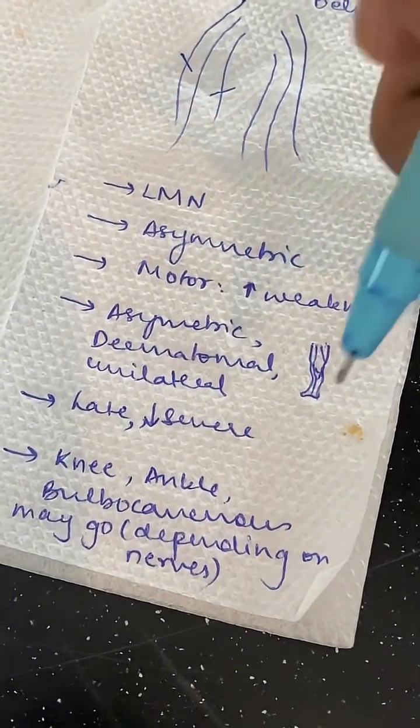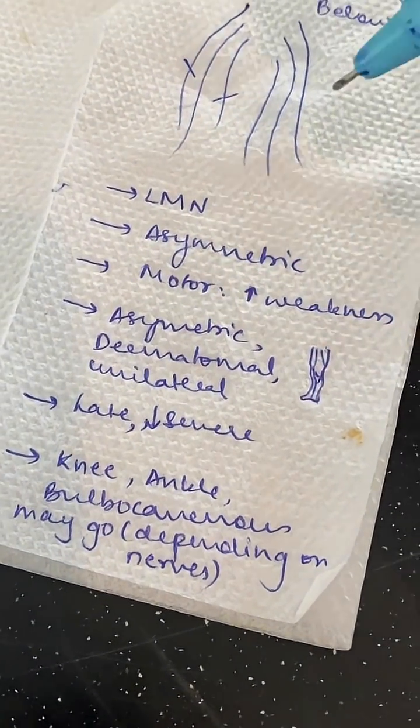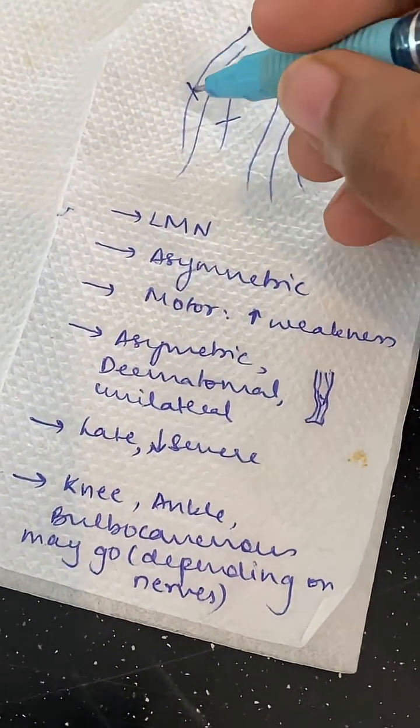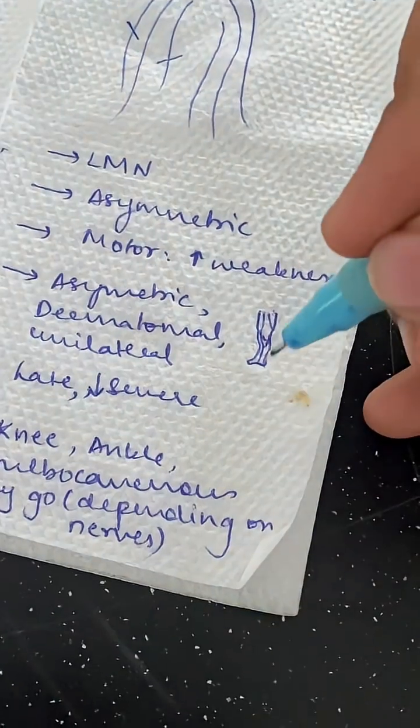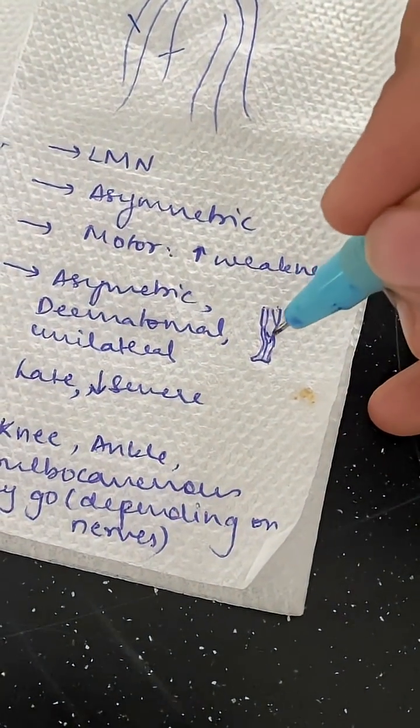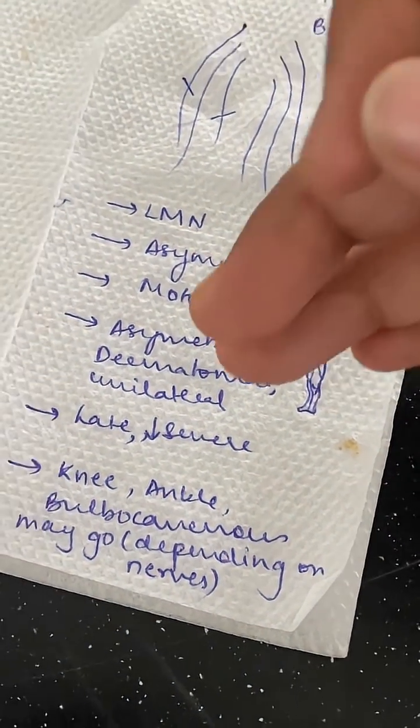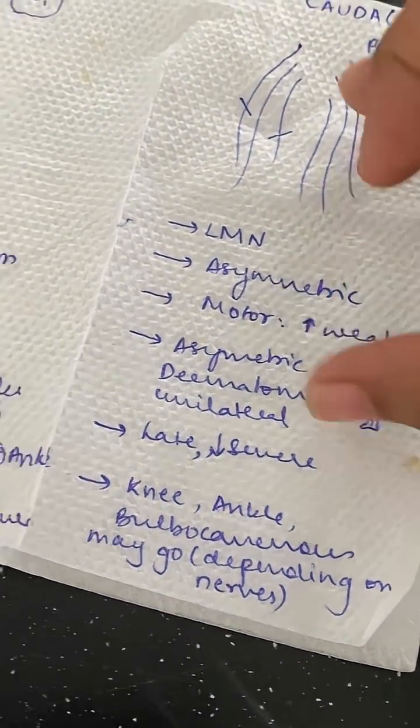In cauda equina, the sensory deficit is more dermatomal — for example, if L1 is involved, then L1 dermatome sensations are gone. It can be unilateral as well.